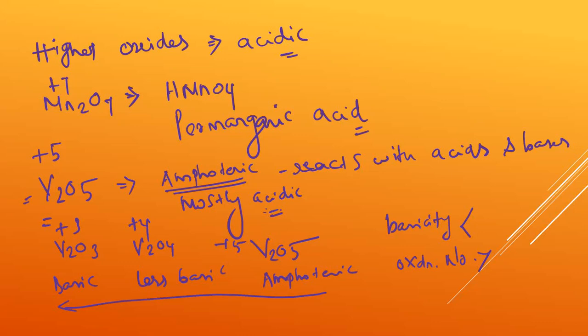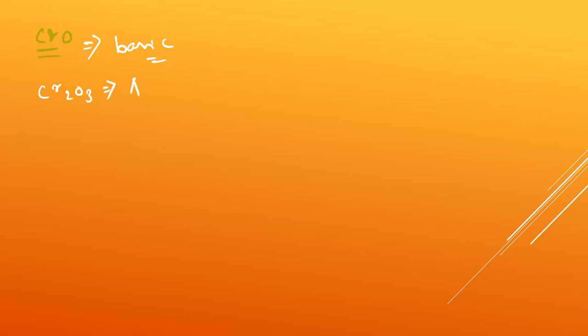V₂O₄ dissolves in acids, making it basic in nature. Cr₂O₃ is amphoteric in nature. Usually, the oxides are insoluble in water. We can classify the oxides into acidic, basic, and amphoteric.